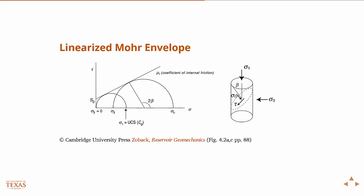But the real envelope is a parabola or something more complicated, and we like simple models as engineers. So the simplest one we could come up with would be if we linearized it. We just took the best fit straight line through the tangent points of those curves. Then we have the linearized Mohr envelope.